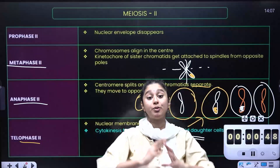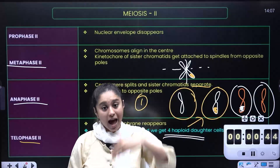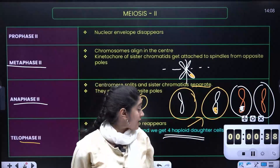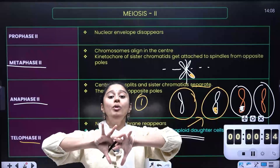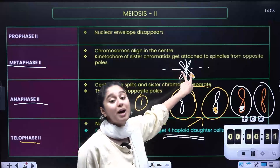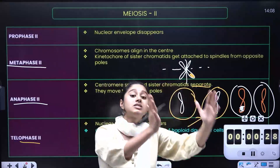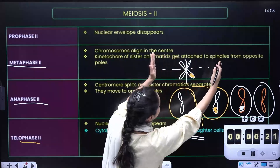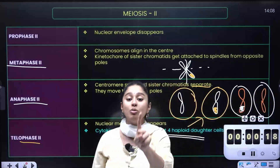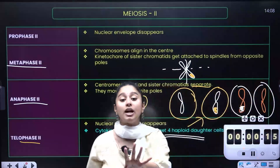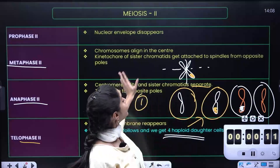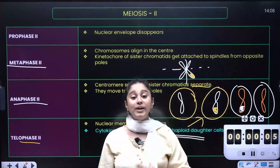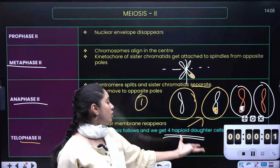So in meiosis 1, prophase 1 with recombination and sub-stages happens; then everyone aligns at the equator and homologous chromosomes separate while sister chromatids remain attached. In meiosis 2, a similar division happens where sister chromatids separate. At the end, I will get 4 haploid daughter cells.